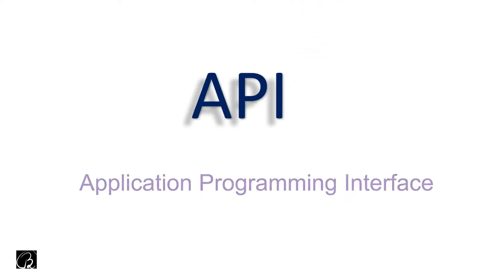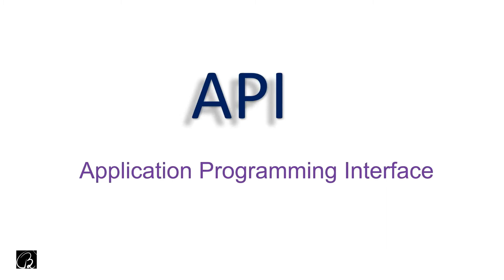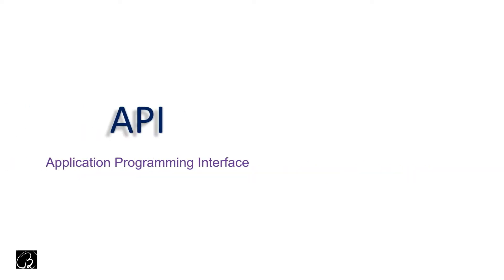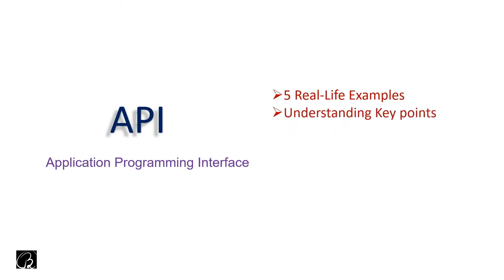API — Application Programming Interface. What is an API and how will it help us? I'm not going to give you the definition right now. Instead, I'll show you some real-life examples, and from there we'll learn some key points. At the end, you yourself can give me the definition and meaning of API. From those key points, you can create your own definition the way you want.